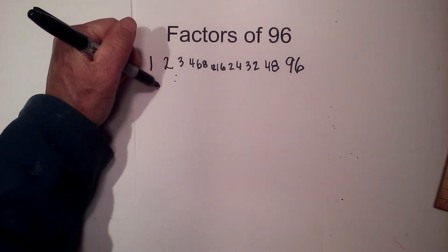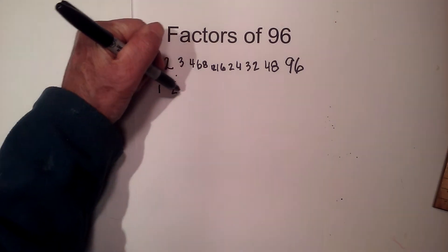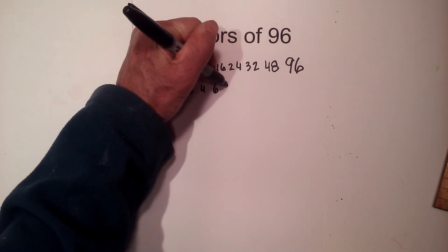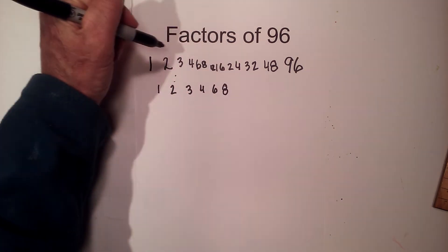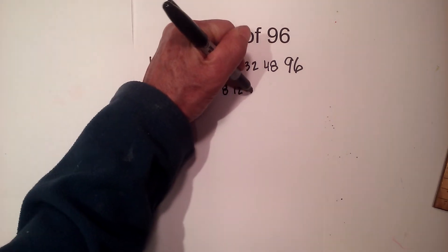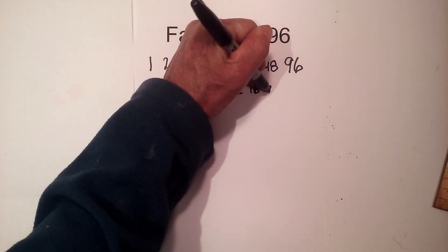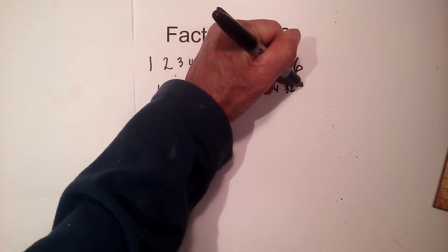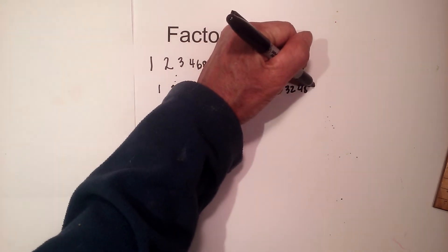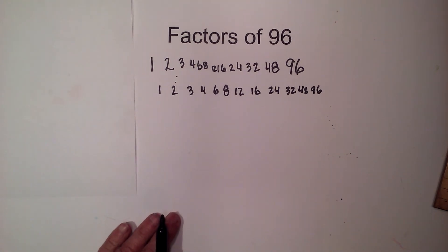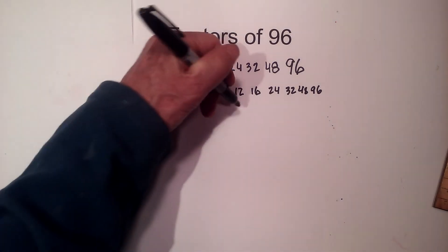Here are all my factors — let me rewrite them: 1, 2, 3, 4, 6, 8, 12, 16, 24, 32, 48, 96. Those are all the factors. Now let's find the prime factorization — all the prime numbers that multiply together to make 96.